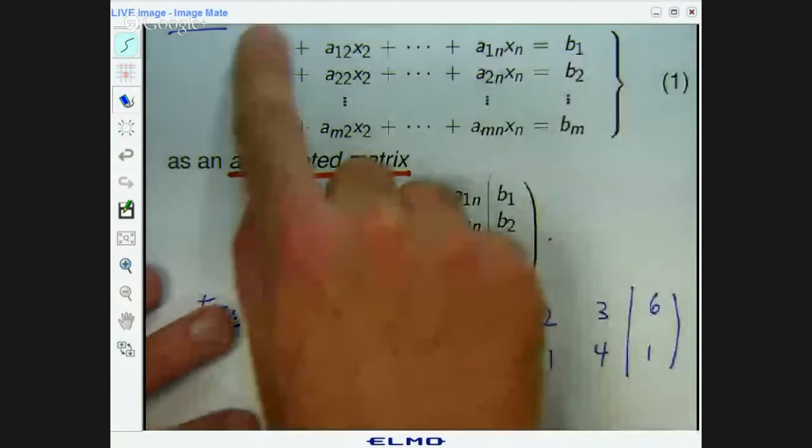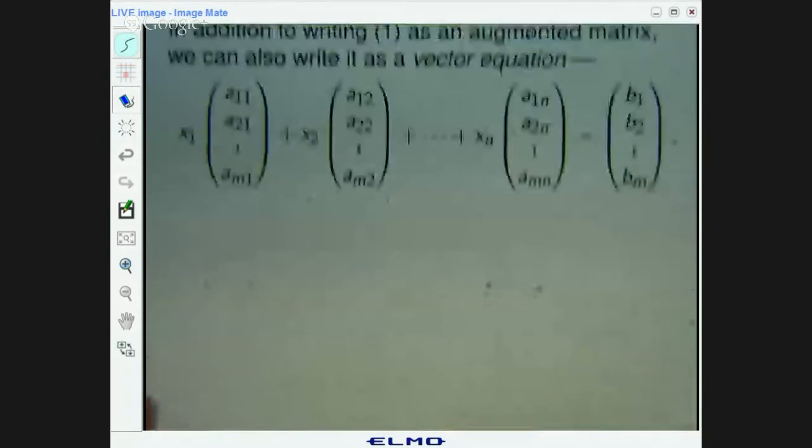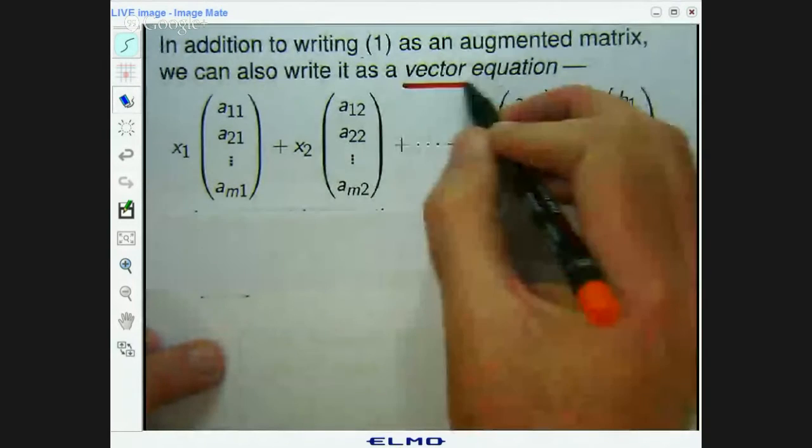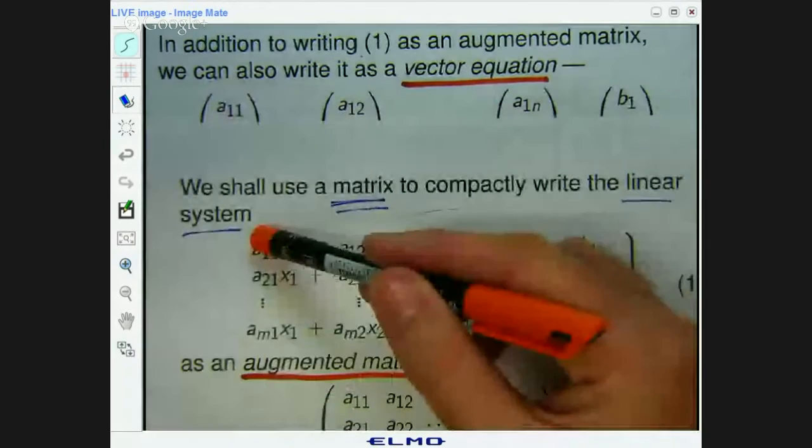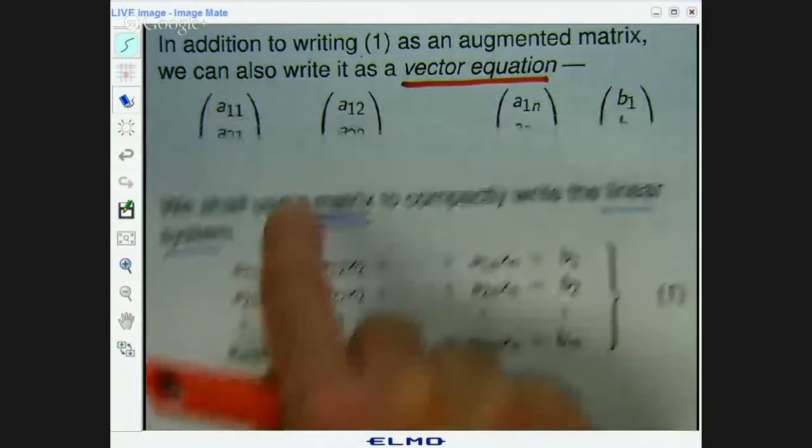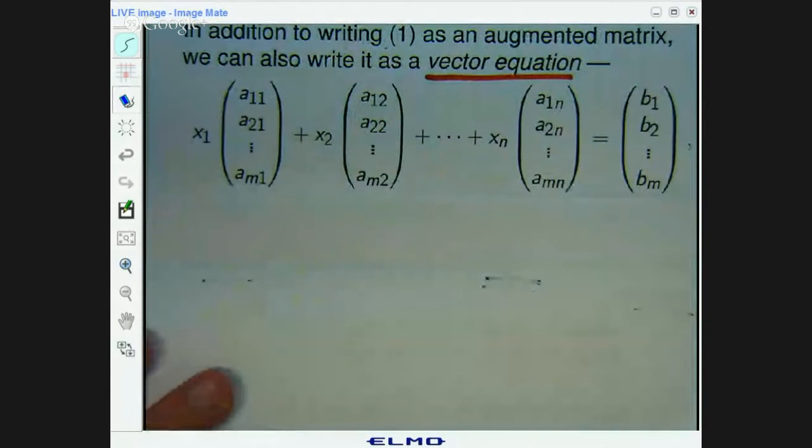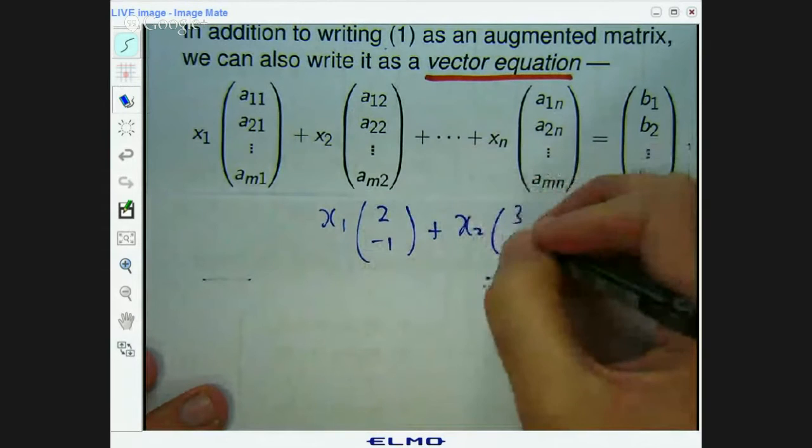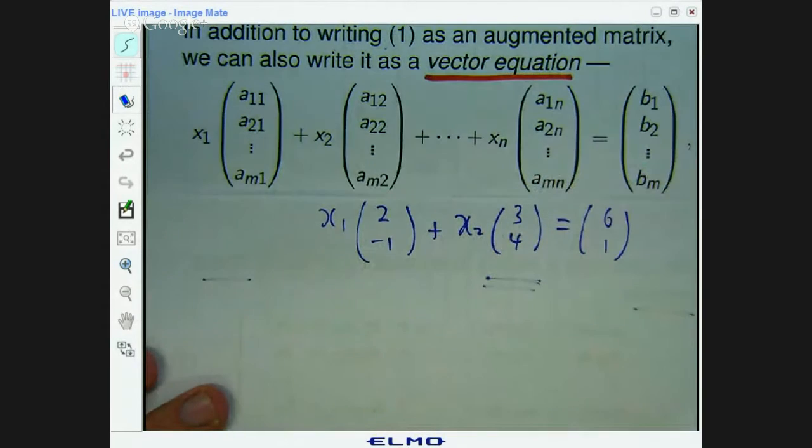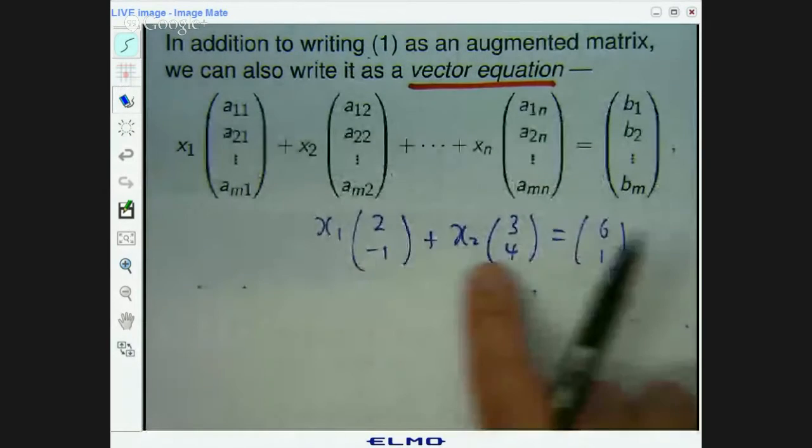Now, you can also write this linear system as a vector equation. Okay? Well, what do I mean by that? Well, you can take these coefficients from down here. You can see all of these coefficients are multiplying just by x1. You can factor out the x1 and write it as a vector. And then you can move on to the x2 and you can add them all up. Okay? So if I was doing this with my previous example, it would be something like this.